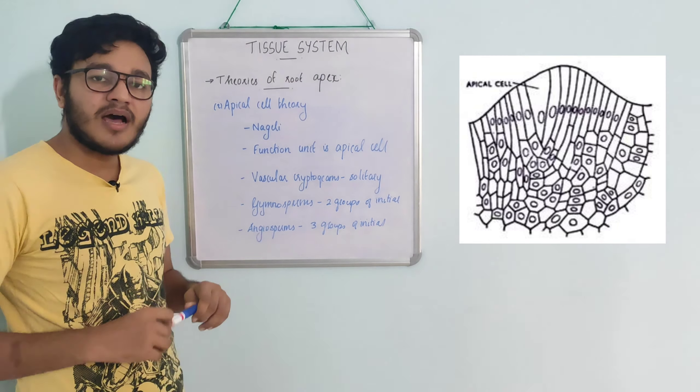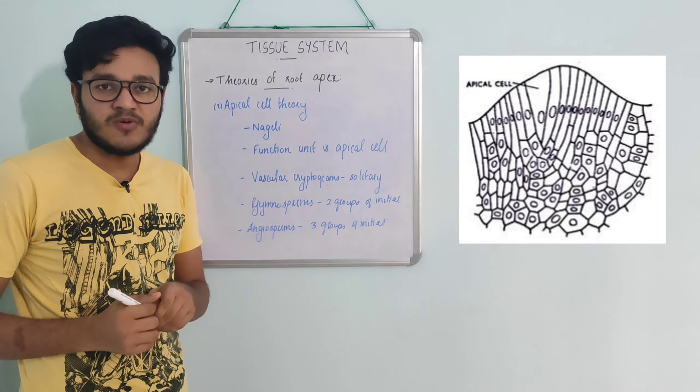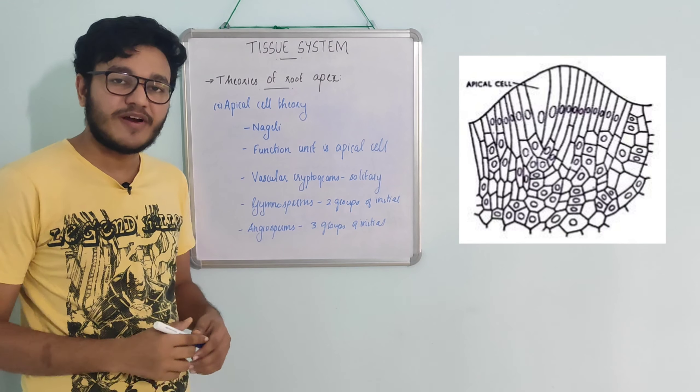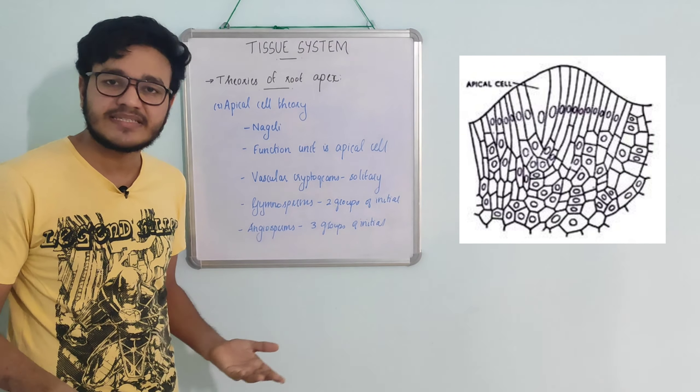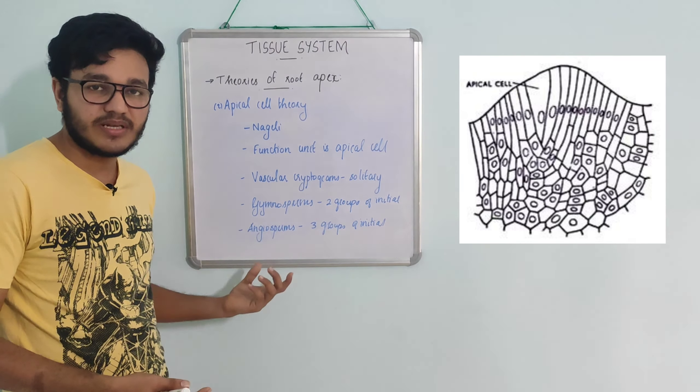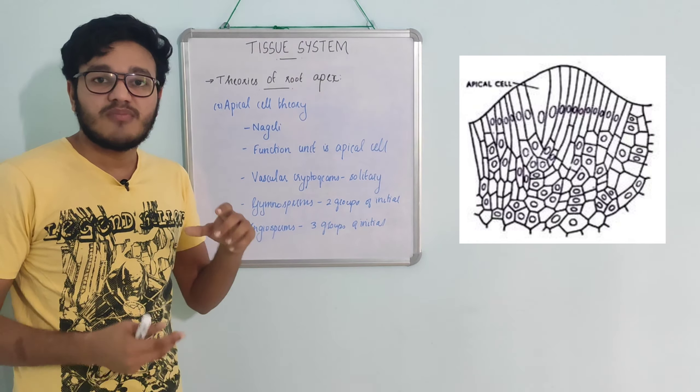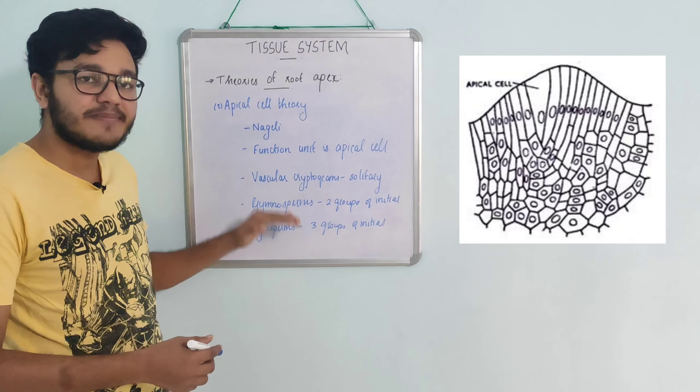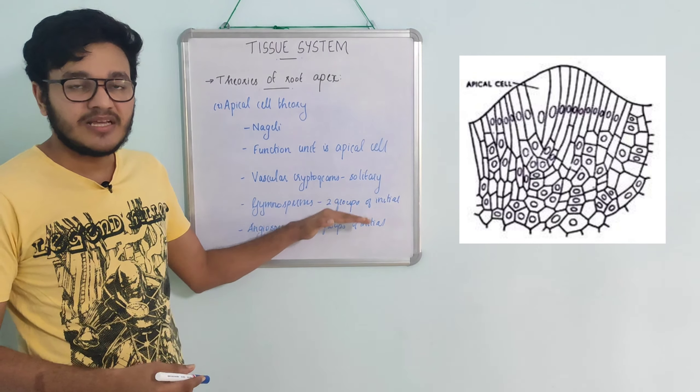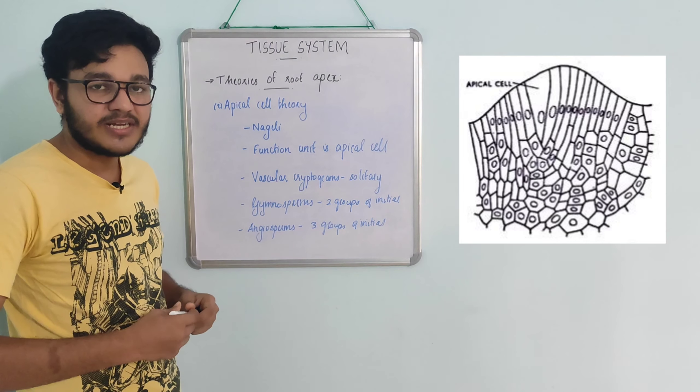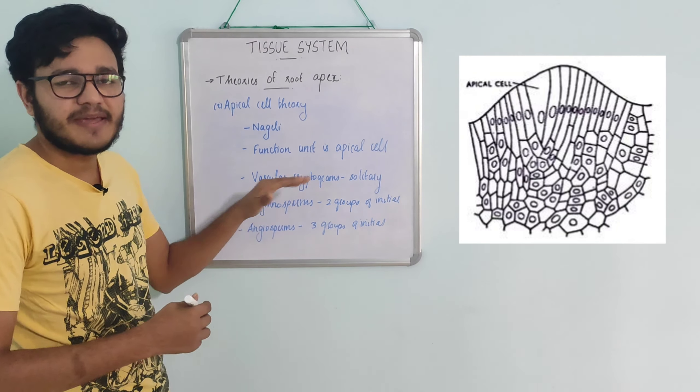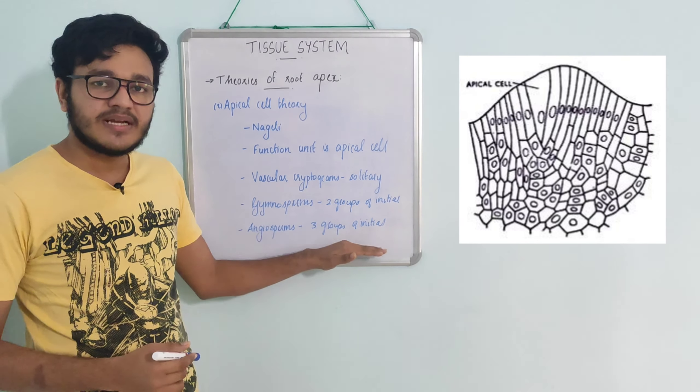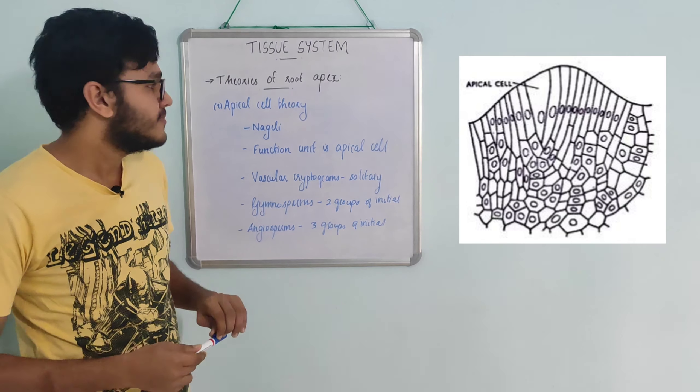In the apical cell theory, different plant groups have different numbers of initial cells. In cryptogams, the root apex has two groups of initials. In pteridophytes and angiosperms, we typically have three groups of initials, and in rare cases, four groups of initials.